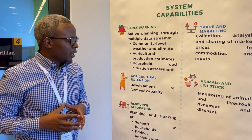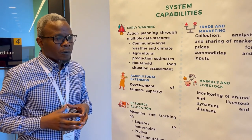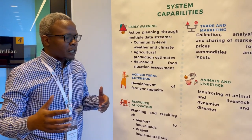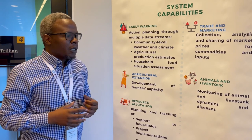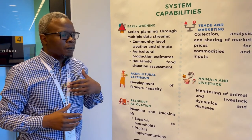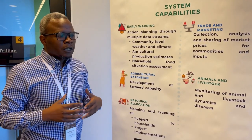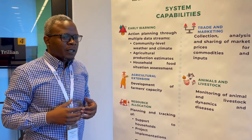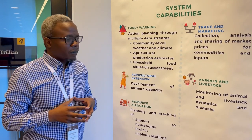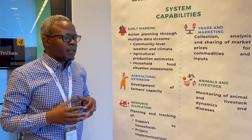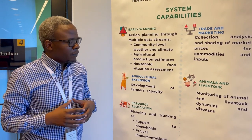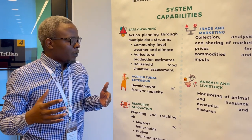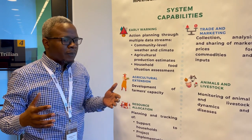There is also the component on agricultural extension, to support extension services. There are various areas of support — for example, nutrition, and what are called lead farmers. There is a lead farmers register. The lead farmers are model farmers, and you look at what sort of training they have. You also follow their followership — who is following them and what they are being trained on.